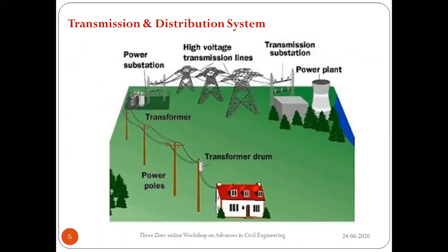This picture depicts the transmission and distribution system. From the power plant, power is produced, stepped up, and transmitted through transmission towers. It is then brought to distribution substations where it is stepped down to 33 kV or 11 kV, and distributed to service receiving substations, which step it down further to the end users — 230 volts or 400 volts depending on the consumer's need.